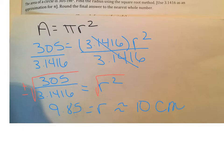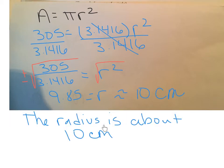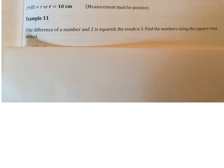And of course, we're going to write this in a complete sentence. The radius is about 10 centimeters. Don't forget your units and your sentence form. Okay, example 11 on that same page, 227.